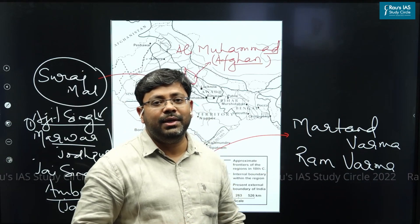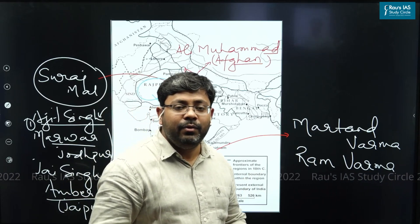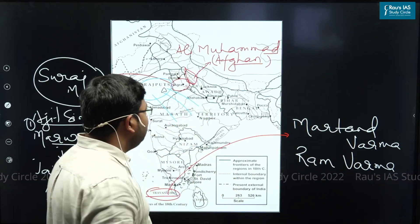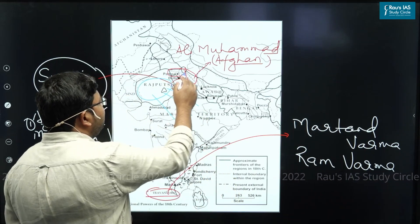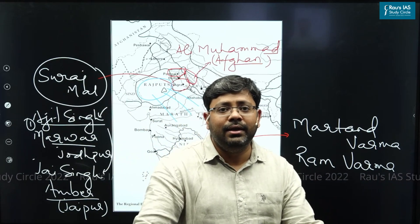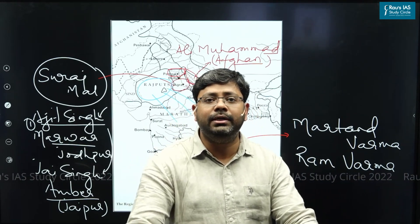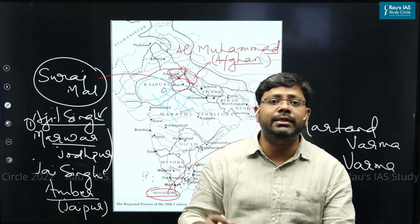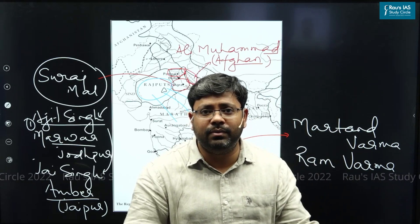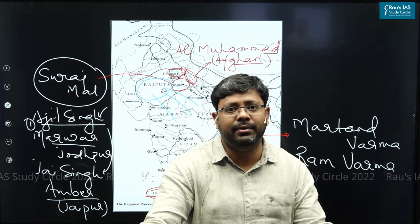One may wonder, with so many regional powers, where were the Mughals? The Mughals were now restricted to the areas around Delhi. Certainly the Mughals had declined, and their decline had given rise to this fragmentation of the political situation in India, leading to the rise of so many regional powers. This is what was discussed in this session of the History Simplified series, and a new session will follow very soon.